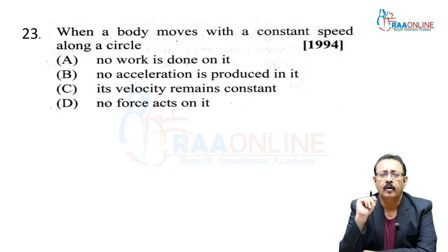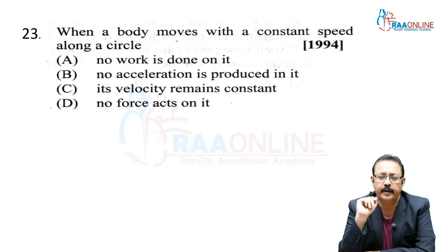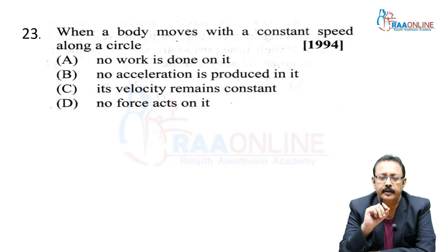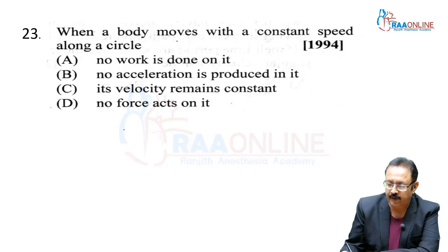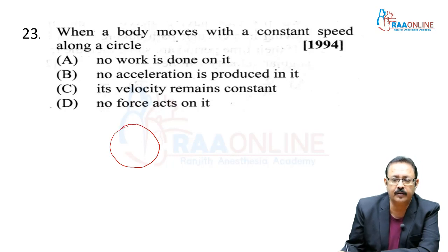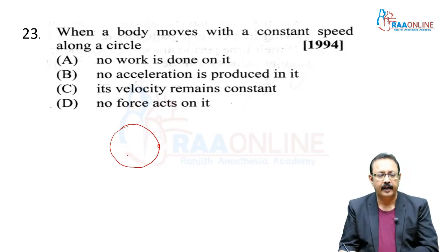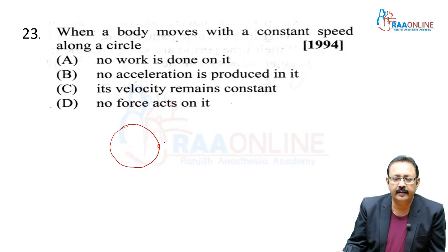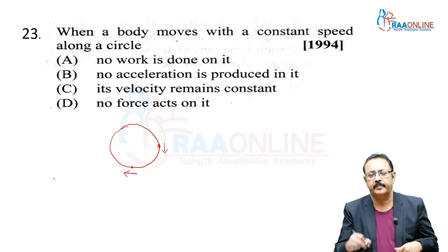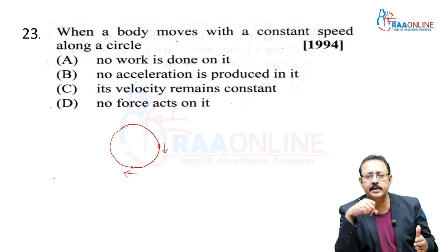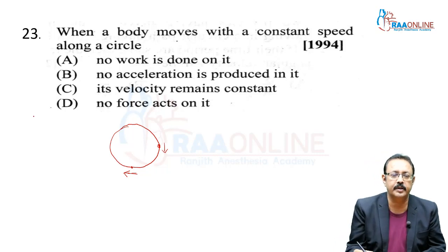Next: When a body moves with constant speed along a circle — no work is done on it, no acceleration is produced in it, its velocity remains constant, no force acts on it. What will happen? At each and every point, the direction of motion is changing. Velocity is a vector quantity; if magnitude is same but direction is changing, you cannot say velocity is constant. So option C (velocity remains constant) is wrong.